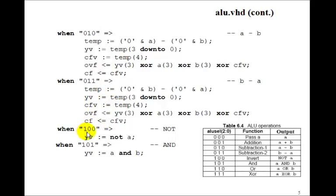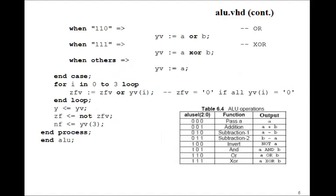When ALU select is 4, we want to invert it. That is, do a NOT A. So we just say Y variable is not A. When it's 5, we want to do A and B. Well, that's just Y variable. It just gets A and B. When it's 6, we want to do an OR. Y variable is just A or B. When ALU select is 7, then Y variable is just A exclusive ORed with B.